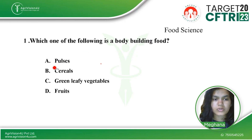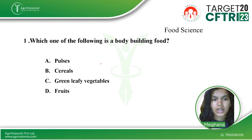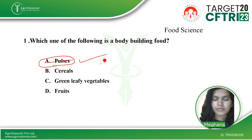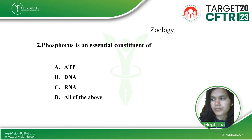The options are: option A, pulses; option B, cereals; option C, green leafy vegetables; and option D, roots. Here option A, that is pulses, are the body building food. Option A is the right answer.